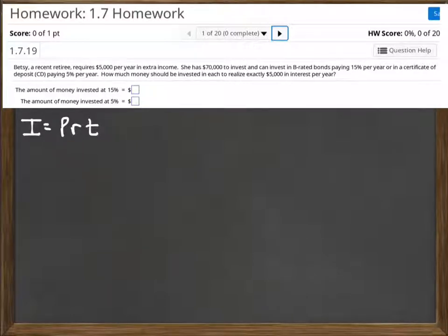How much money should be invested in each to realize exactly $5,000 in interest per year? Now you might think, well, why won't she just put the money in the higher interest rate one? Well, the key phrase there is it's B-rated bonds. They're less reliable.